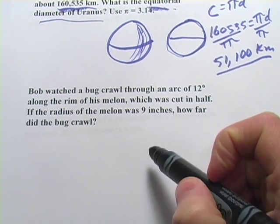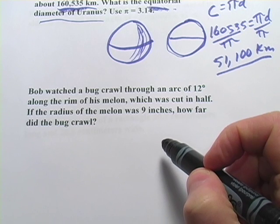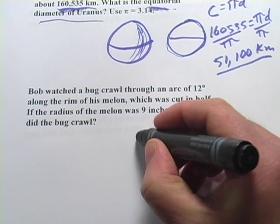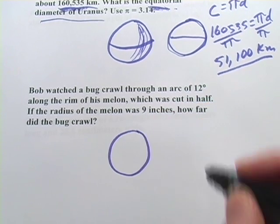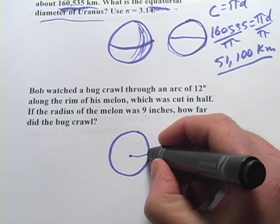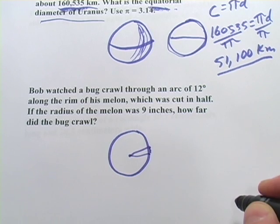Let's look at one more here. Bob watched a bug crawl through an arc of 12 degrees along the rim of his melon, which was cut in half. So apparently Bob is eating a half a melon, and it's perfectly circular, and there was a bug on it, and it started crawling along and crawled through 12 degrees of an arc.